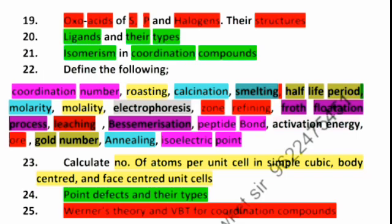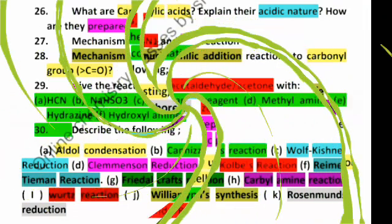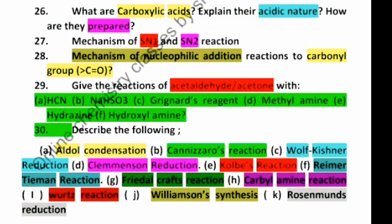Now let's see the B paper, that's the organic chemistry. Number first is carboxylic acids, their acidic nature and preparation. Mechanism of SN1 and SN2 reactions, how to differentiate them, and the nature of C-X bond in haloalkanes and haloarenes.